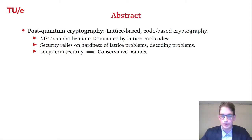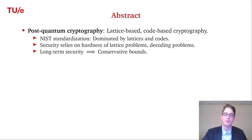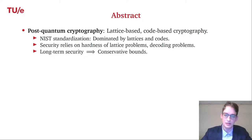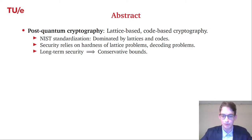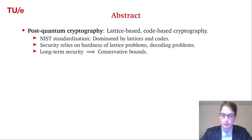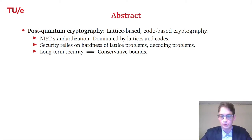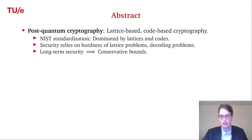Since we are usually interested in long-term security, we would ideally like to have conservative bounds on the attack costs — accounting for possible improvements in hardware giving faster algorithms, but also for better analytic techniques and better algorithms in the future. We want parameter selection now to ensure that security does not turn out to be lower than we aimed for in 10 years.